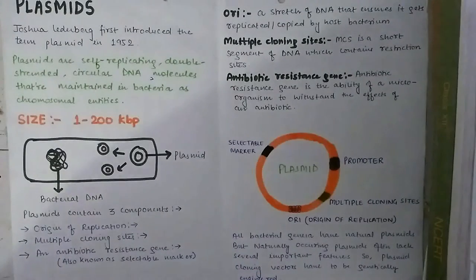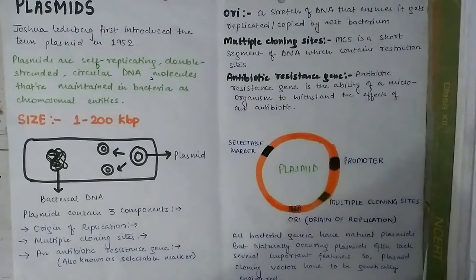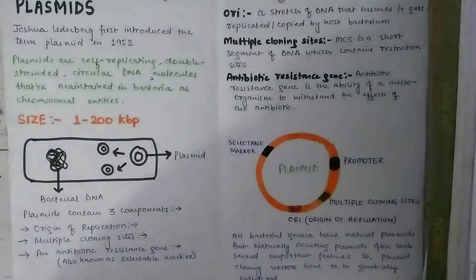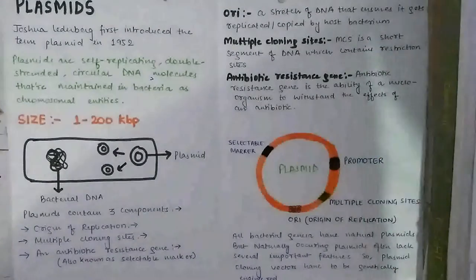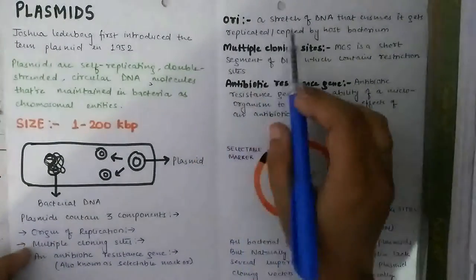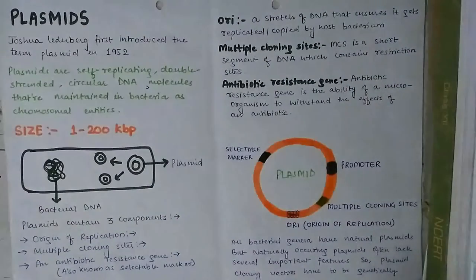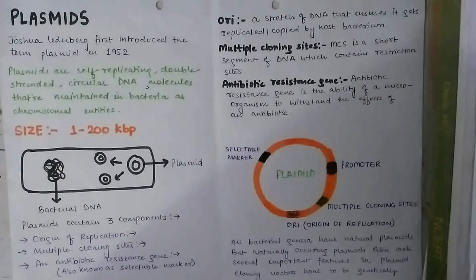The origin of replication is a small sequence within DNA from where replication initiates. Without this site, replication does not take place. It is a stretch of DNA that ensures the plasmid gets replicated and copied by the host bacterium — these are the small sequences found within DNA from where replication initiates.